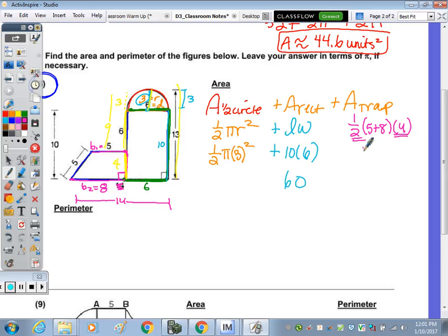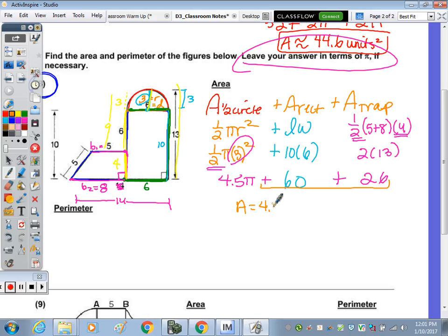So the area of the trapezoid is 1 half, sum of the bases, so 5 plus 8 times 4. Half of 4 is 2, and then 2 times 13 would be 26. To finish, 3 squared, and then half of 9 is 4.5 pi. If our answer is to be in terms of pi, we just combine these. So it's going to be 4.5 pi plus 86 units squared.